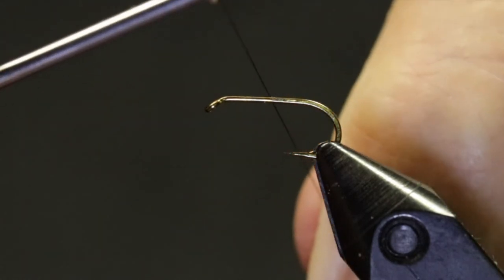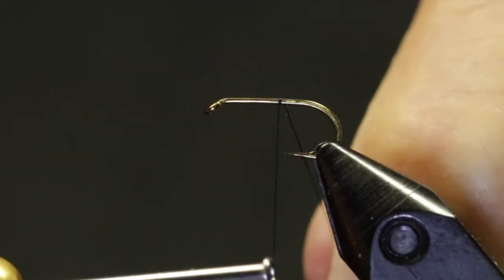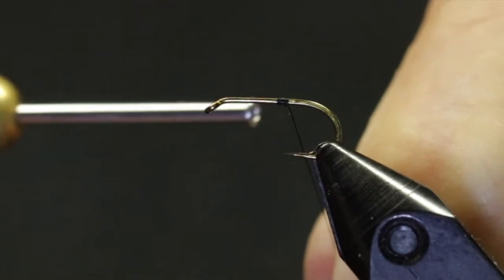They can be tied in a number of different sizes and colors and can be tied with or without wings. Here I've got a standard dry fly hook in a size 14. For the thread I'm using 8-0 unithread in black.